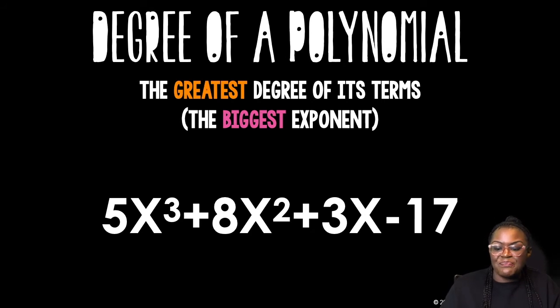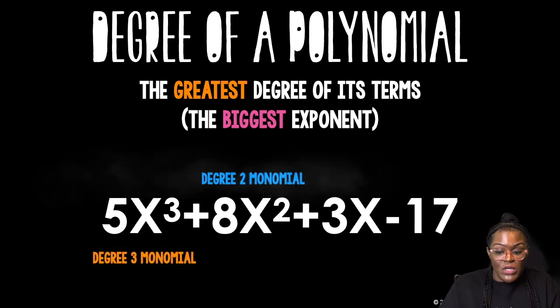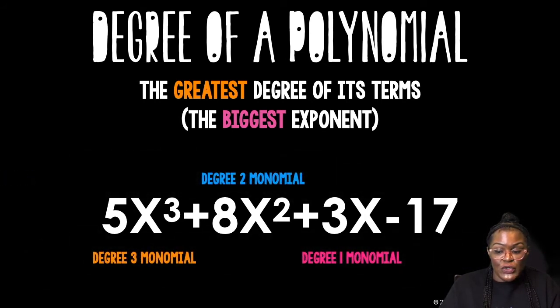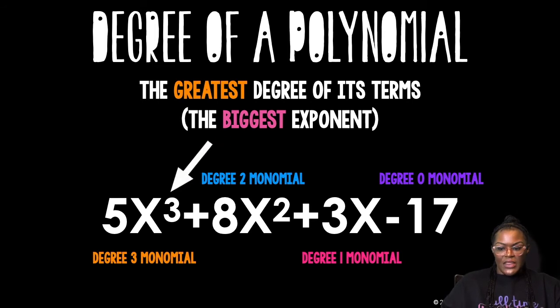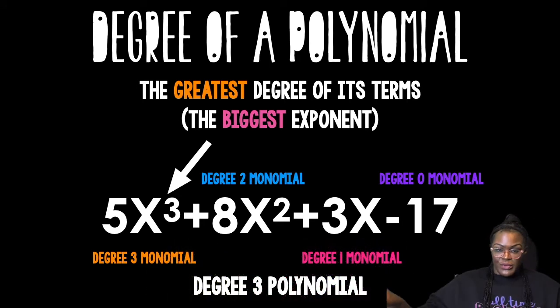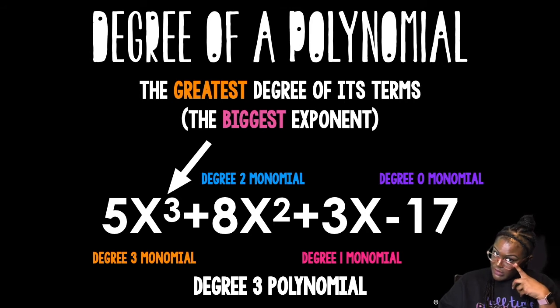I have 5x cubed, 8x squared, plus 3x, minus 17. Degree 3 monomial, degree 2 monomial, degree 1 monomial, and a degree 0 monomial. So this polynomial is made up of 4 monomials. I'm only going to choose the biggest one to categorize the entire set. And obviously, the biggest one is that 3. So I'm going to categorize this as a degree 3 polynomial. You with me?